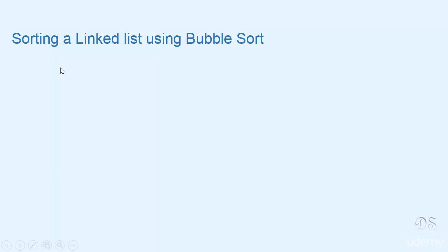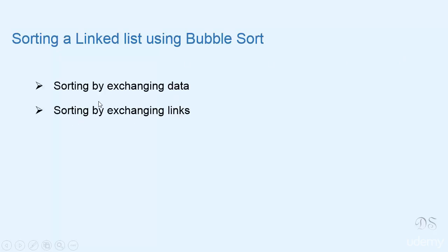In this video we'll see how we can sort a linked list using bubble sort. To know what bubble sort is, you can go to the sorting section and see the lecture on bubble sort. There we had sorted an array; here we'll sort a linked list. In linked list sorting can be performed in two ways: by exchanging data and by exchanging links. In arrays we could do only by exchanging data. So first let's see how we can sort by exchanging data.